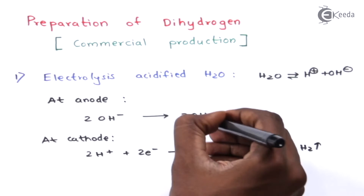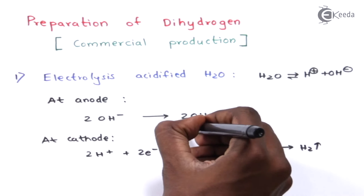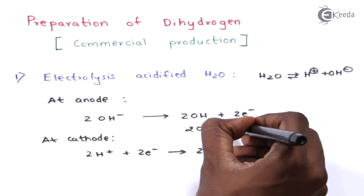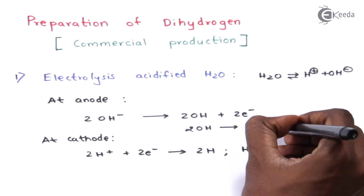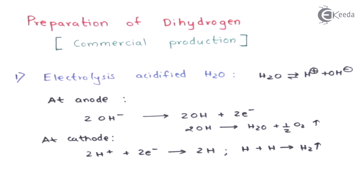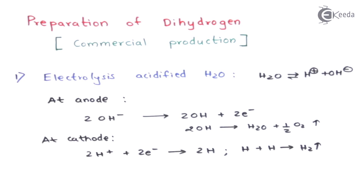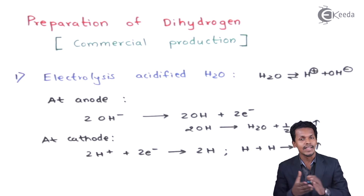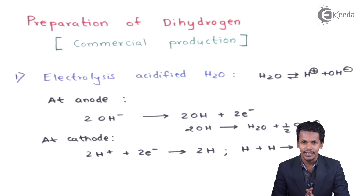The two moles of OH at the anode eventually give H₂O along with evolution of half a mole of O₂. So hydrogen gas is liberated at the cathode while oxygen is liberated at the anode. This is a commercial method to prepare both H₂ and O₂. Now let us move on to the next method.